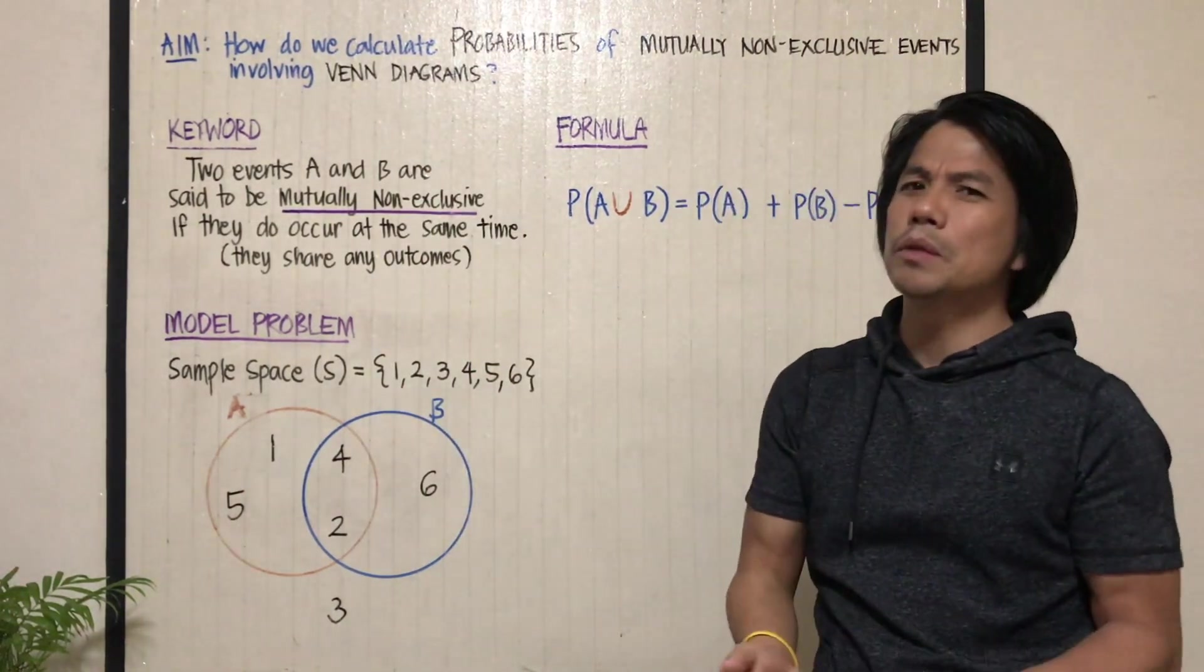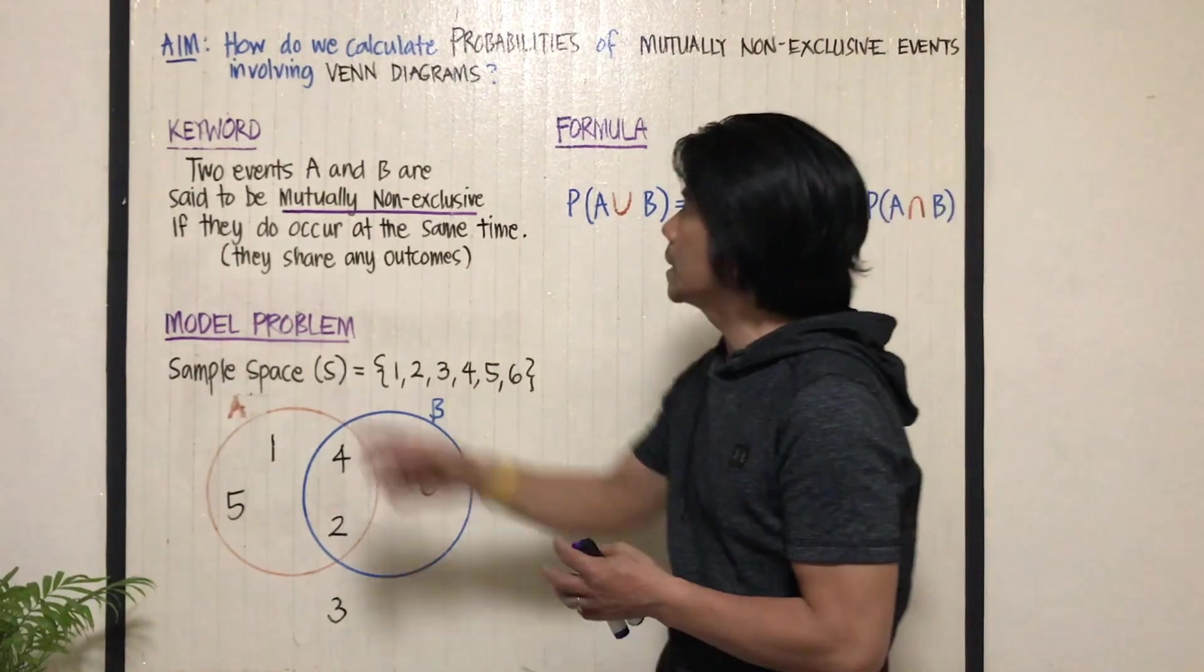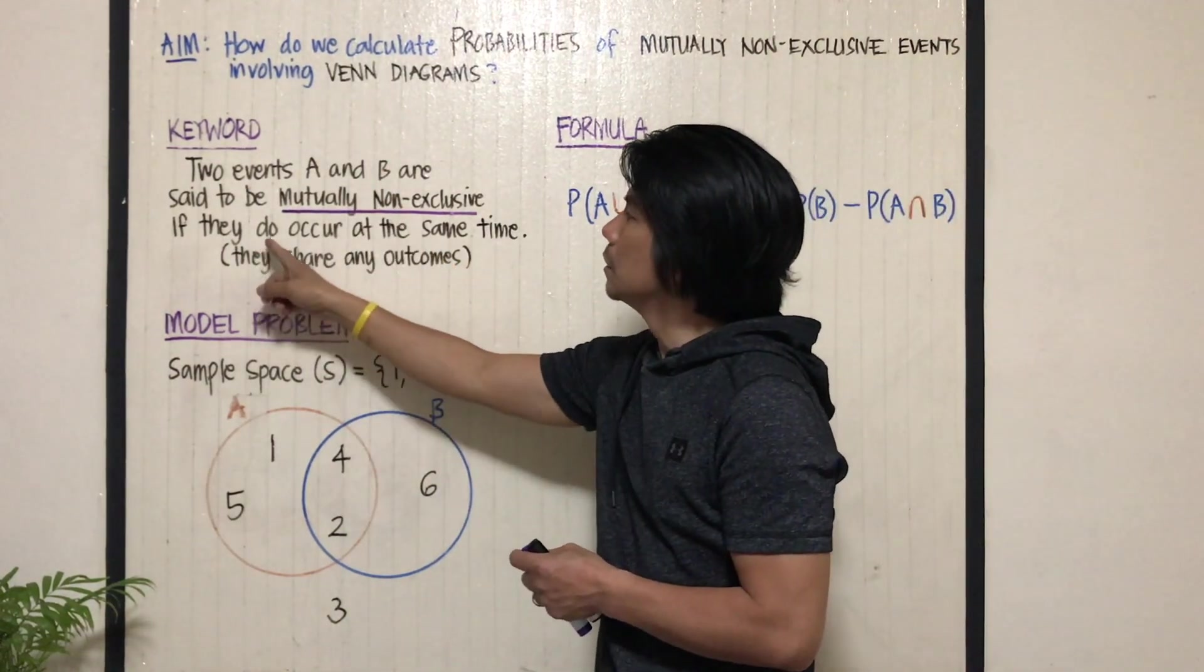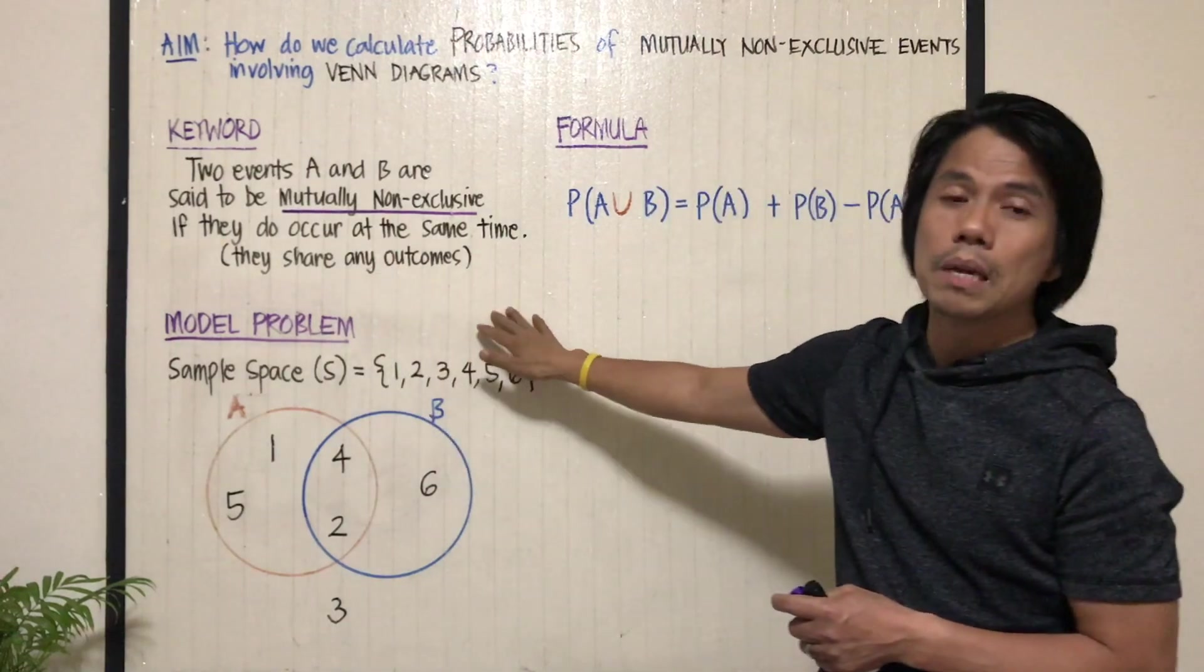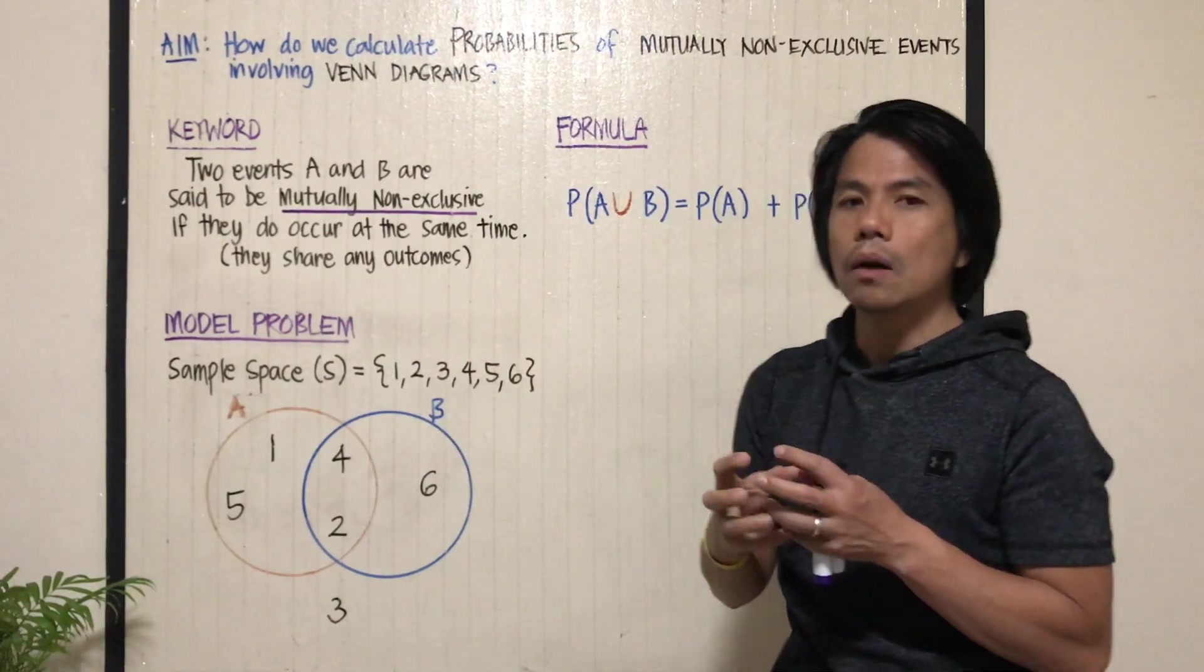But what are mutually non-exclusive events? These are two events A and B that do occur at the same time, meaning they share the same outcomes.